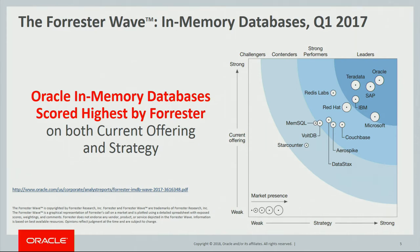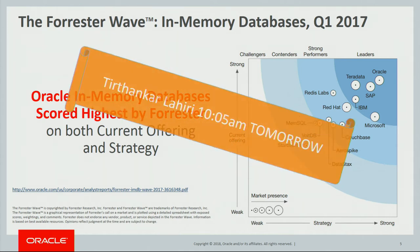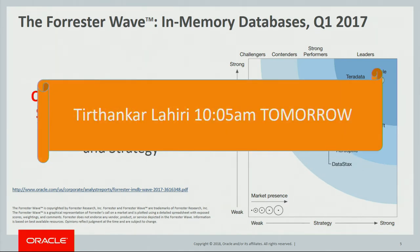In general about Oracle in-memory: about two years ago, Forrester did an analysis comparing various vendors' in-memory offerings in terms of strategy and current product sets, and did a ranking. The top right corner is where you want to be, and because of the robust technologies in Database In-Memory, TimesTen, and other Oracle products, they put Oracle at the top as of early 2017. Tirthankul Lahiri is giving a keynote tomorrow morning where he'll talk about TimesTen, Database In-Memory, and other Oracle in-memory technologies.